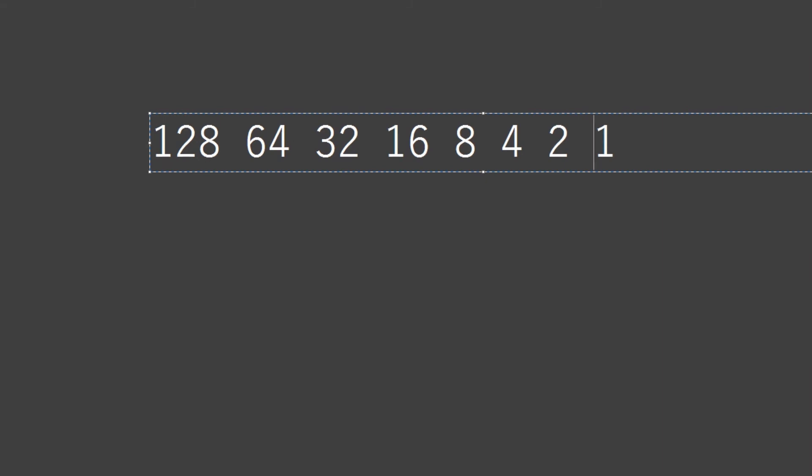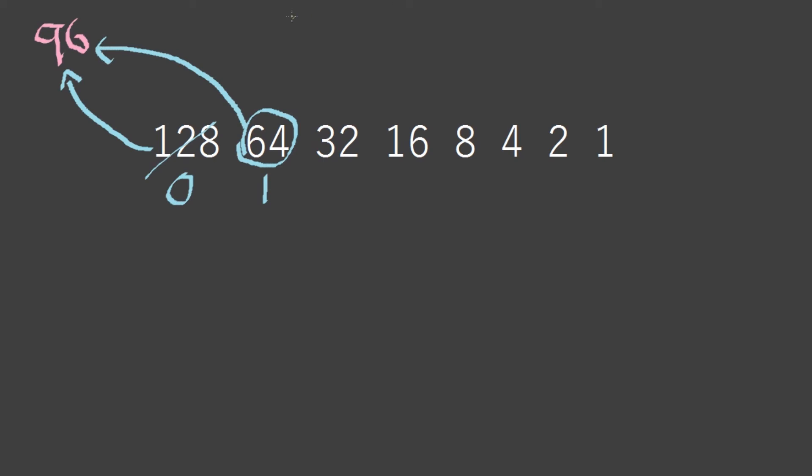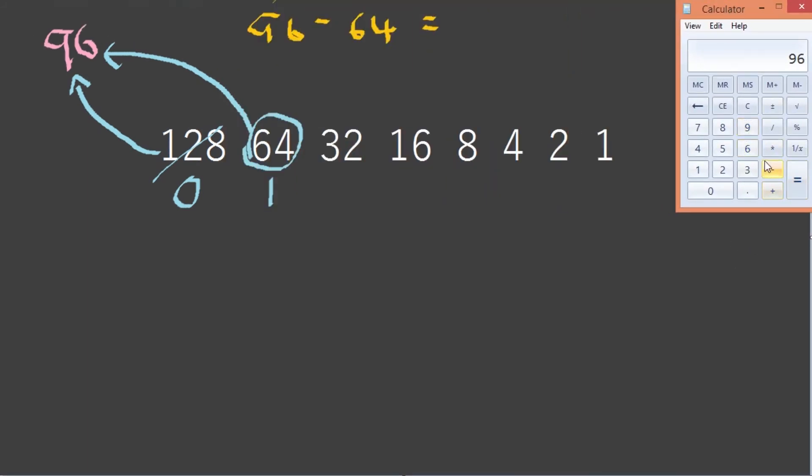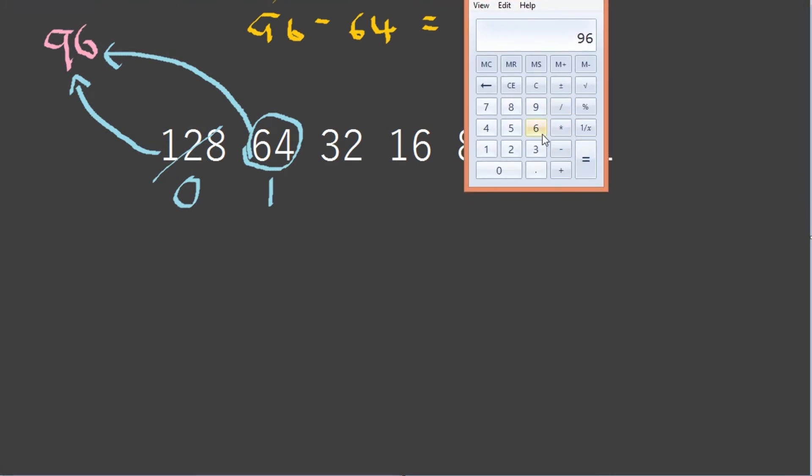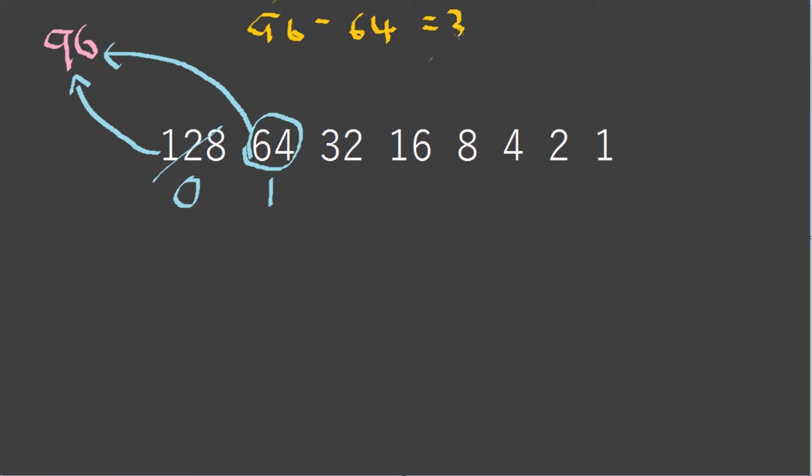Can 128 go into 96? It can't, so cross that out. Can 64 go into 96? Yes it can, so we do 96 minus 64, which equals 32.